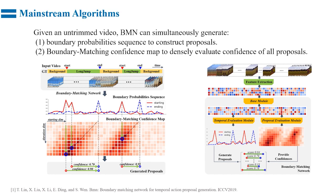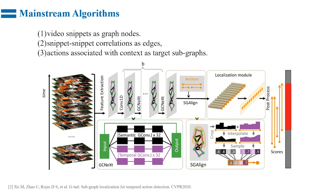One of the mainstream algorithms is BMN. Given an untrimmed video, BMN can simultaneously generate boundary probability sequences to construct proposals and a boundary matching confidence map to densely evaluate the confidence of all proposals. GTAD is also a mainstream algorithm. GTAD provides a GCN model to adaptively incorporate multi-level thematic context into video features and casts temporal action detection as a sub-graph localization problem, treating video snippets as graph nodes, snippet-snippet correlations as edges, and actions with context as target sub-graphs.